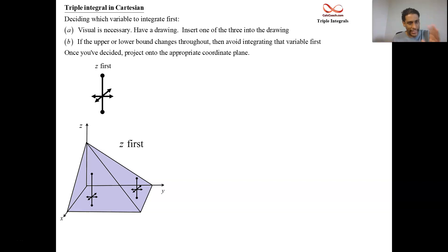Once you decide which variable that you wanna integrate out first, then what happens is you project onto the plane where that variable is equal to zero. So if you're doing z first, you project onto the z equals zero plane, that's the xy plane.